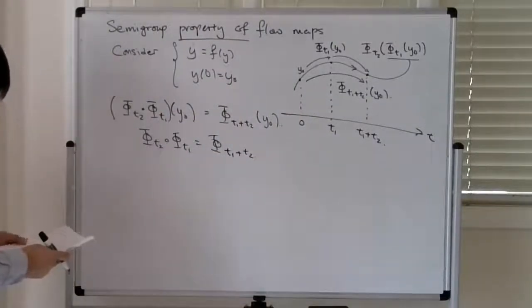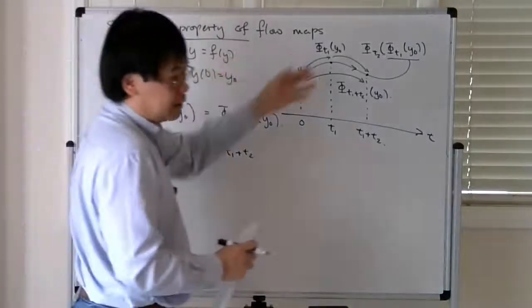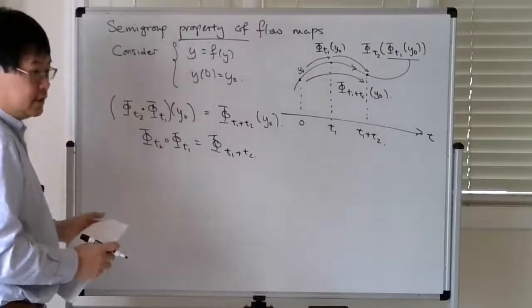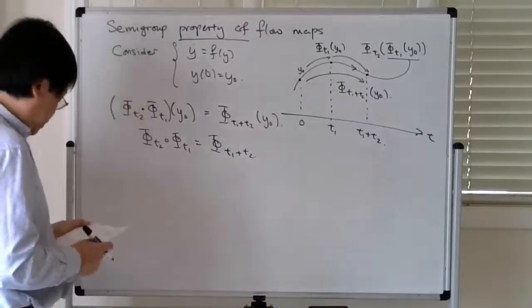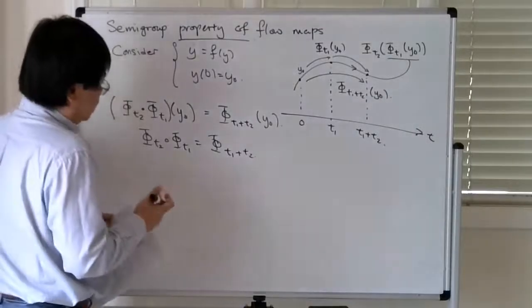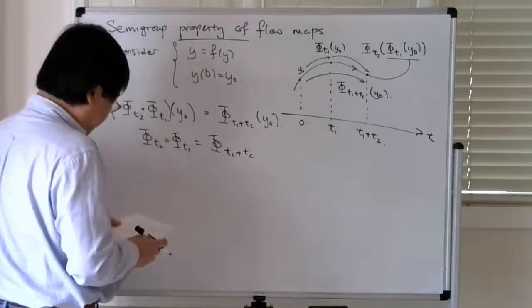And here we are assuming that the differential equation is autonomous and there's a certain time invariance of the problem. So if you can solve the initial value problem for both positive and negative times...